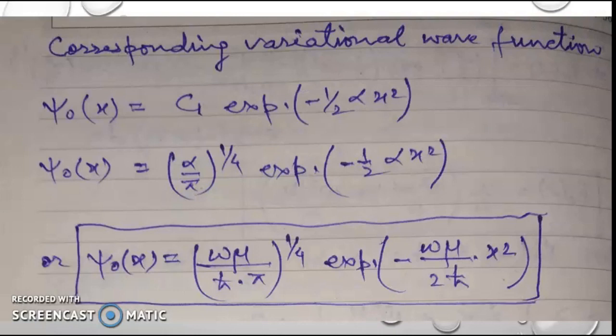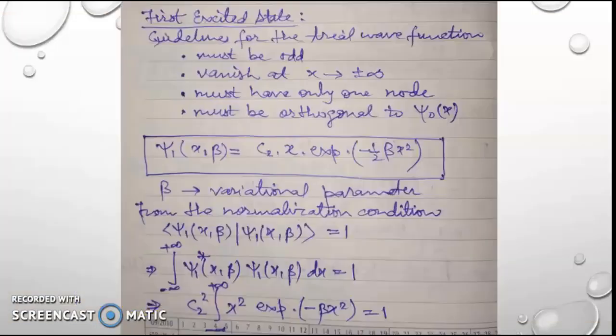Now, using the value of alpha obtained in the expression for psi naught, the ground state wave function, we obtain the expression for the ground state wave function psi naught of x equal to c1 times exponential of minus one-half alpha x squared, and from there we get the full expression for the ground state wave function psi naught of x.